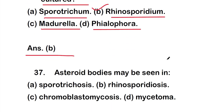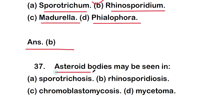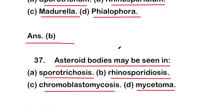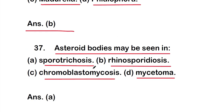Question 37: Asteroid bodies may be seen in option A - sporotrichosis, option B - rhinosporidiosis, option C - chromoblastomycosis, or option D - mycetoma. The right answer is option A, sporotrichosis. Asteroid bodies may be seen in sporotrichosis.